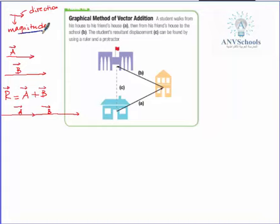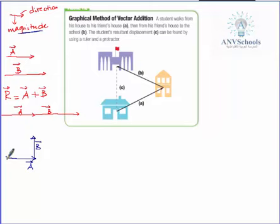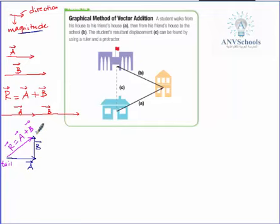For example, if I have vector A and vector B, the resultant vector of these two can be obtained by joining the tail of the first vector to the head of the second vector. We draw a line from tail to head, and that gives us the resultant vector R, which equals vector A plus vector B.